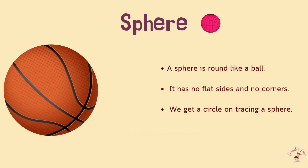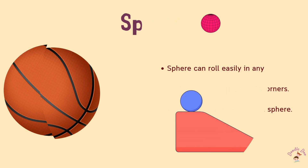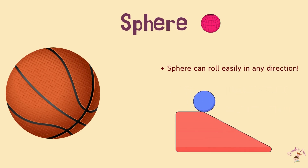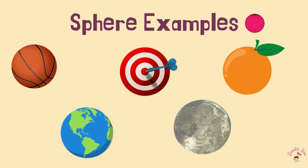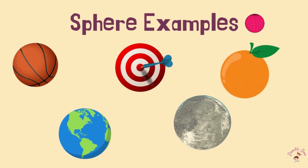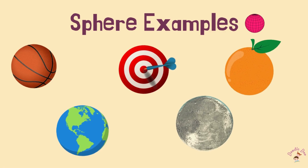Sphere is round like a ball. It has no sides, no corners. We get a circle on tracing a sphere. A sphere can only roll. Examples: Football, Orange, Earth.